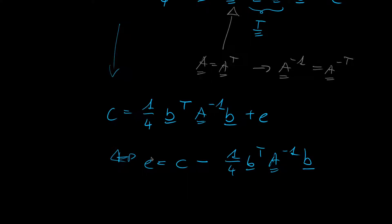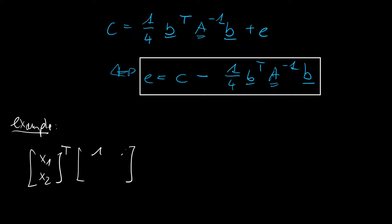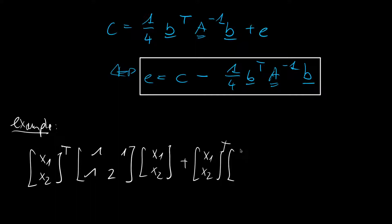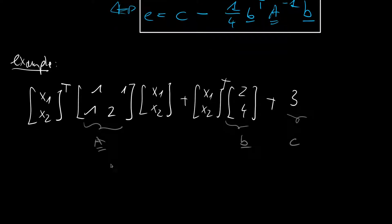Let us also look at an example: a two-dimensional case with x1 x2 transposed times the matrix 1 1 1 2 times x1 x2, plus x1 x2 transposed times vector b which is 2 4, plus scalar 3. We identify matrix A, vector b equals 2 4, and scalar c equals 3. Note that A is symmetric, as it equals its own transpose.